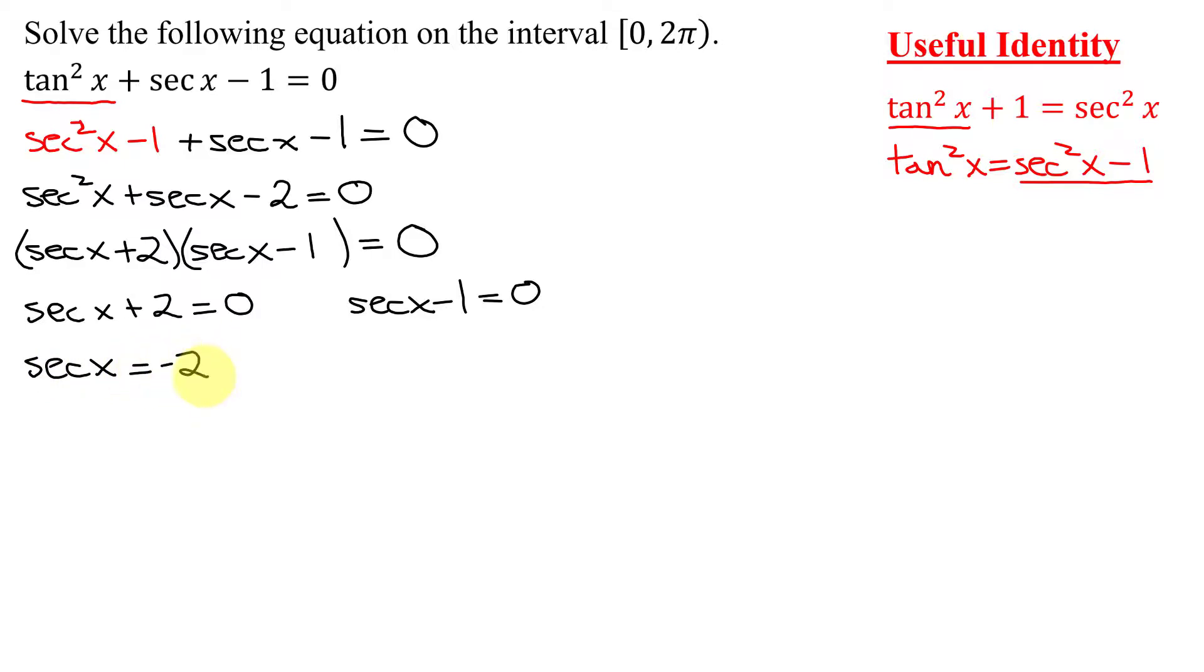And now using the reciprocal functions, remember the secant of x is just 1 over the cosine of x = -2. I'm going to turn that into a fraction by dividing it by 1. Cross multiply: cos x times -2 is -2 cos x = 1. Divide both sides by -2. I get cos x = -1/2.